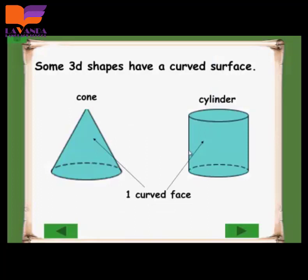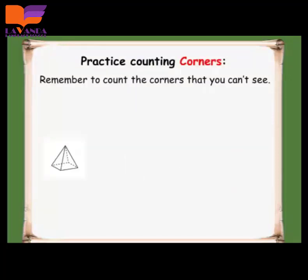Some 3D shapes have no edges — only a curved surface. Like a cone and the cylinder. Look with me — there are no edges on the cone and no edges on the cylinder, just a curved surface or a curved face.